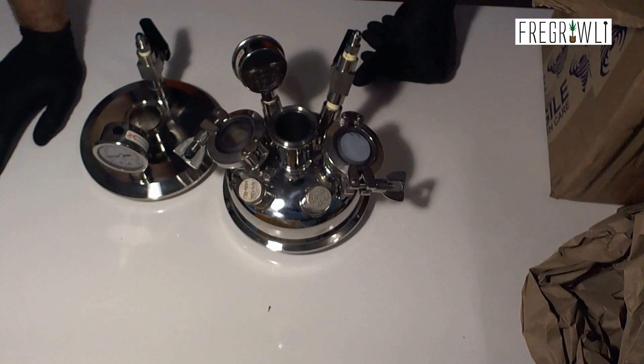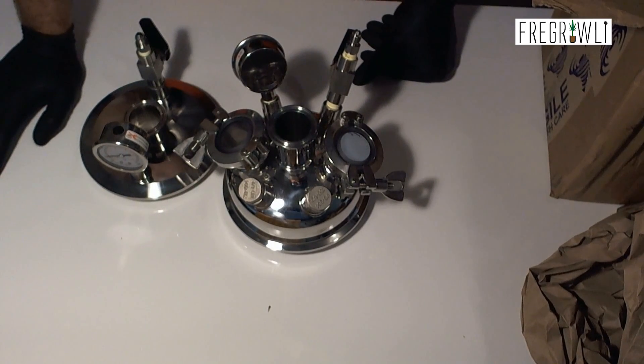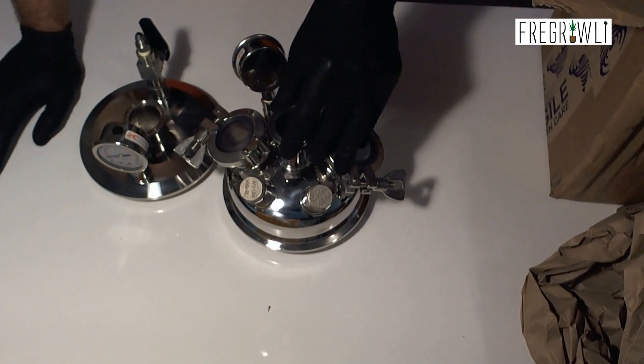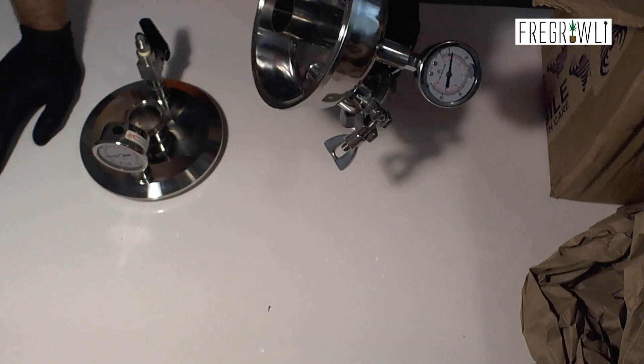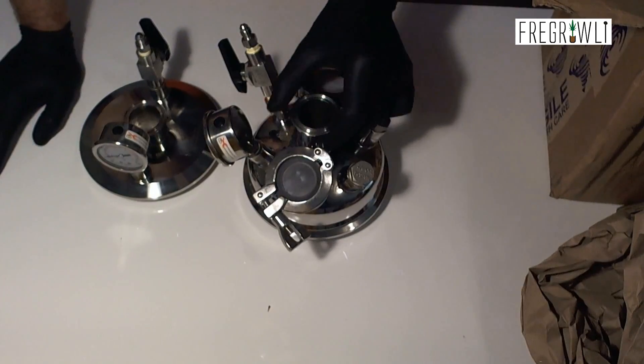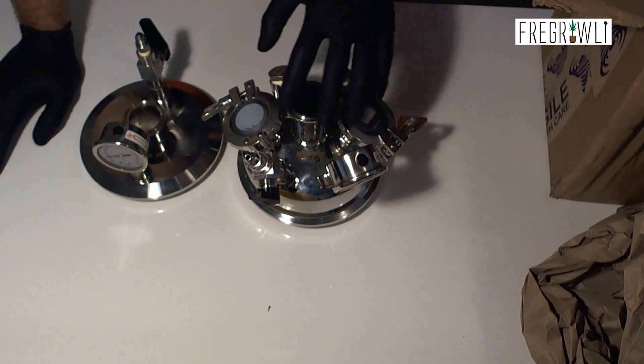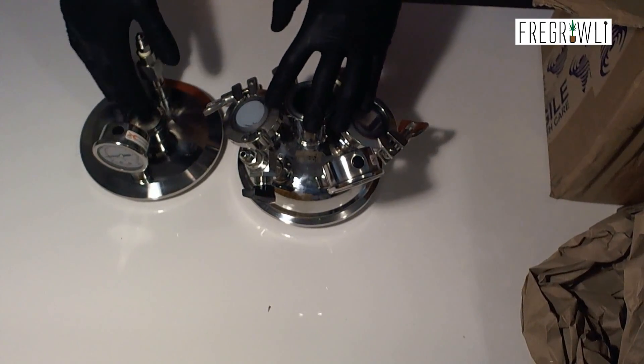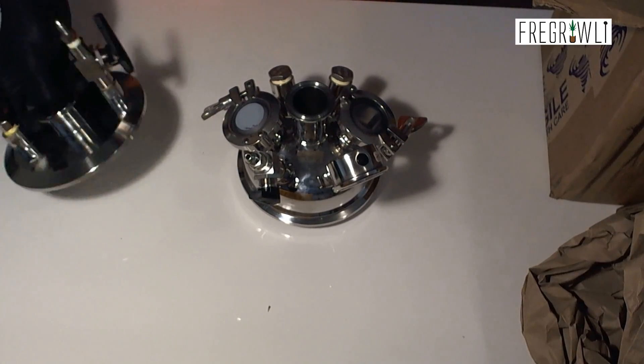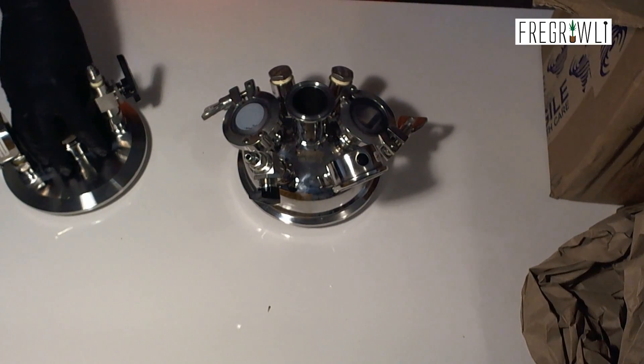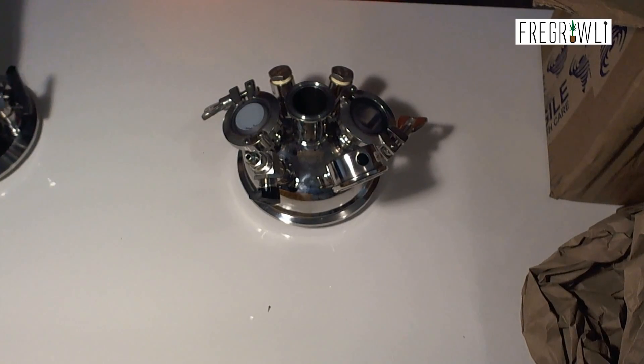I believe they do have eight, maybe ten and twelve - several different sizes of the hemi lids. This is the smallest one. This fits basically my six inch collection base with the one pound system. If I were to go any bigger than one pound system, I probably would consider upgrading several things.